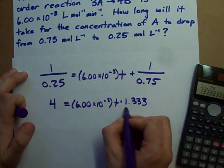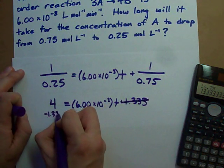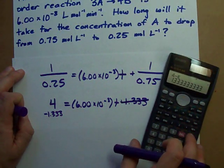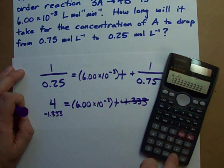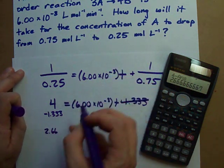How do I undo this addition? Well, that's easy. I subtract it from the other side. 4 minus 1.33333 is 2.66667.